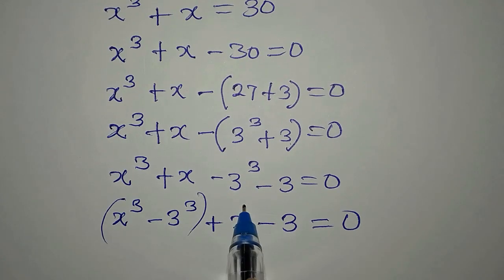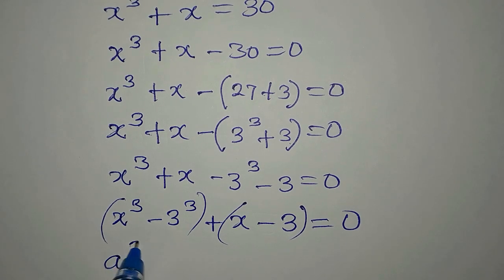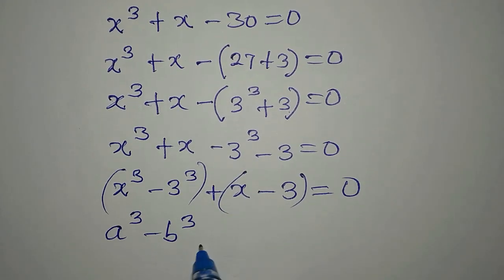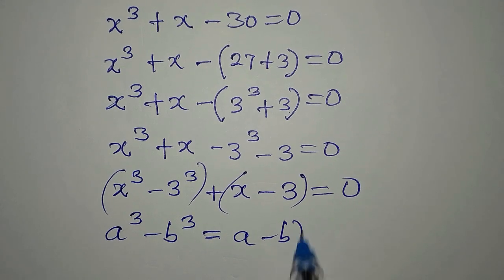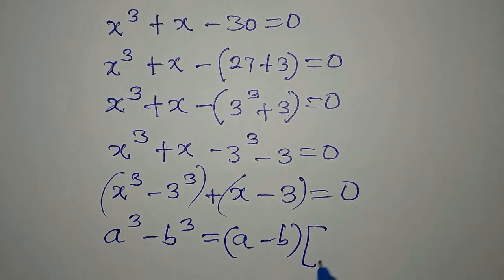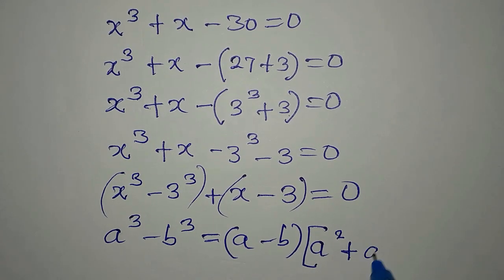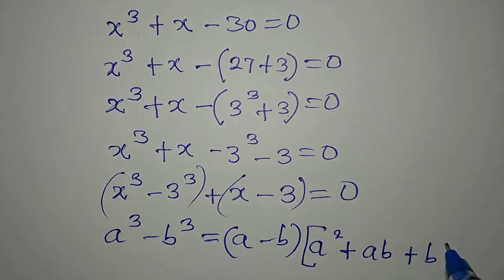I can deal with each part separately. If we have a to the power of 3 minus b to the power of 3, this is equal to a minus b, multiplied by the bracket a squared plus ab plus b squared.